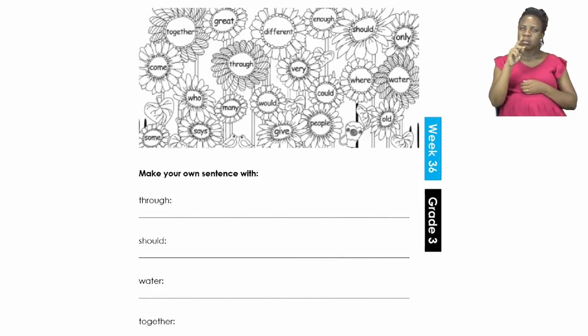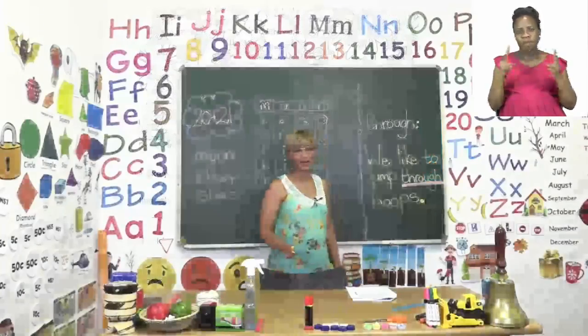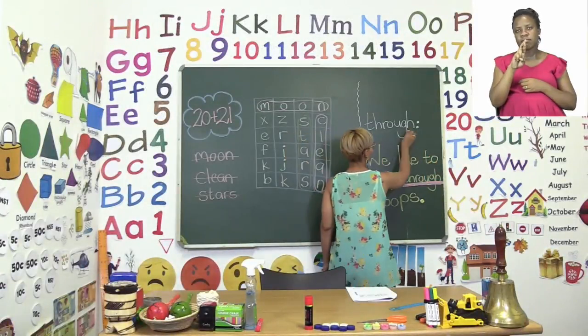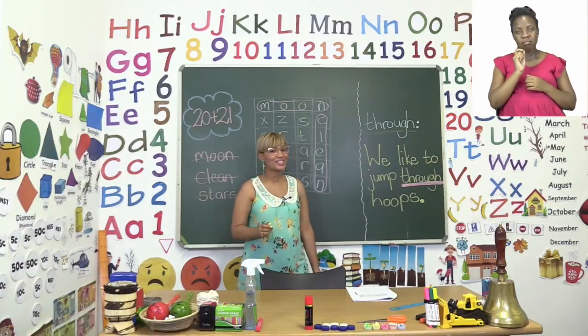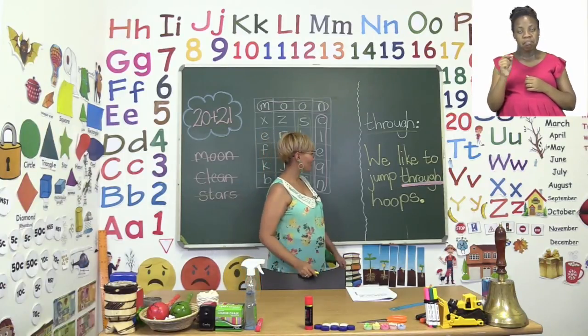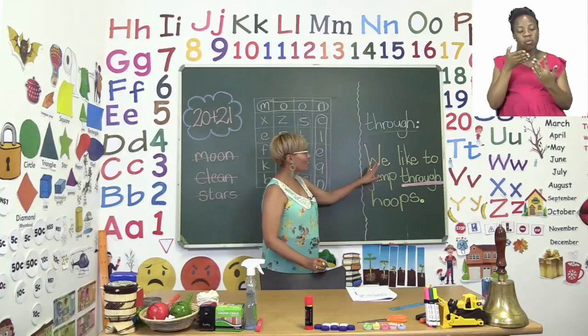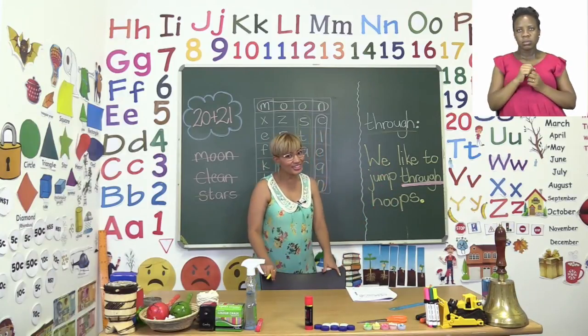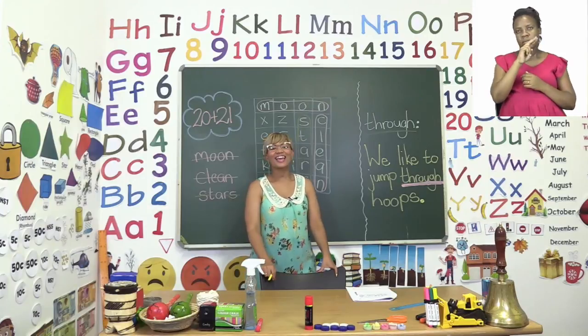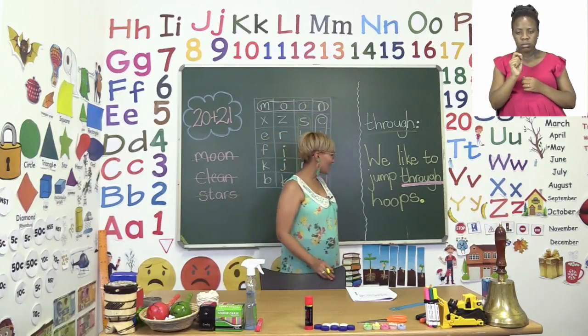Now boys and girls I used the first word to make my own sentence on the board. So let's quickly see what is this sentence. Remember this is the word through. It's the first word. Now you can go ahead and make your own sentence but let's see mine. My sentence reads we like to jump through hoops. Do you also like to jump through hoops? Yes you do because it's lots and lots of fun.